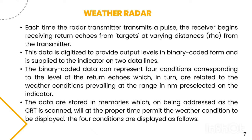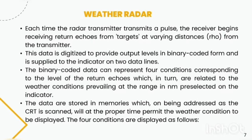Weather radar. Each time the radar transmitter transmits a pulse, the receiver begins receiving return echoes from targets at varying distances from the transmitter. This data is digitalized to provide output levels in binary coded form and is supplied to the indicator on two data lines. The binary coded data can represent four conditions corresponding to the level of return echoes, which in turn are related to the weather conditions prevailing at the range in NM preselected on the indicator. The data are stored in memories which, on being addressed as the CRT scans, at the proper time permit the weather condition to be displayed.